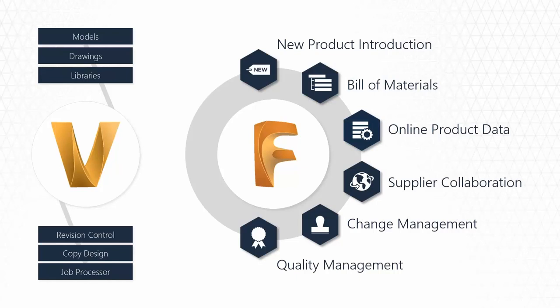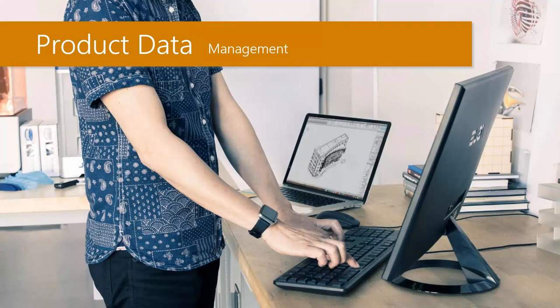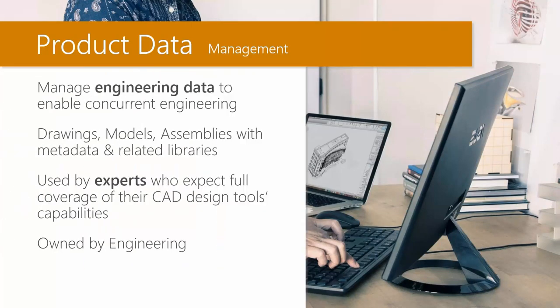Fusion Lifecycle is a PLM — product lifecycle management — tool with purpose-built functionality to manage processes such as new product introduction, change management, quality, and supplier management. Your data is still in Vault, so today we're talking about connecting your Vault data and bringing it into Fusion Lifecycle to comprehensively manage those business processes. Product data management is an engineering-focused tool — it manages engineering data, is owned by engineering, and is directly integrated with your CAD authoring tools.